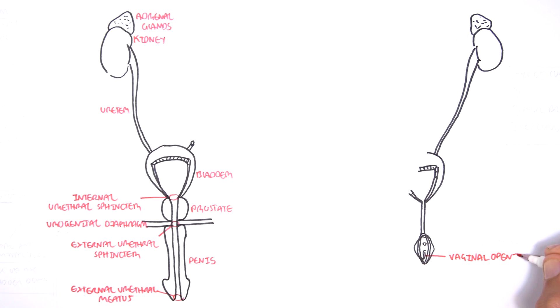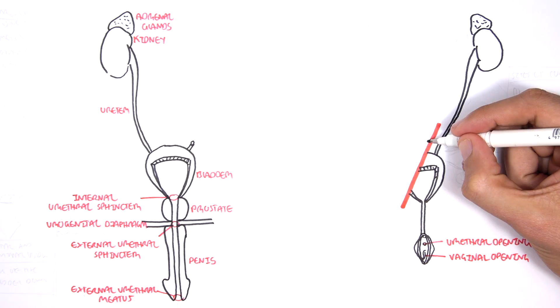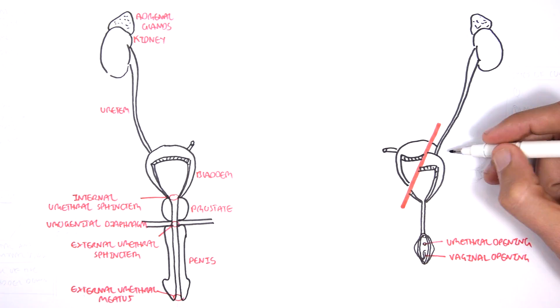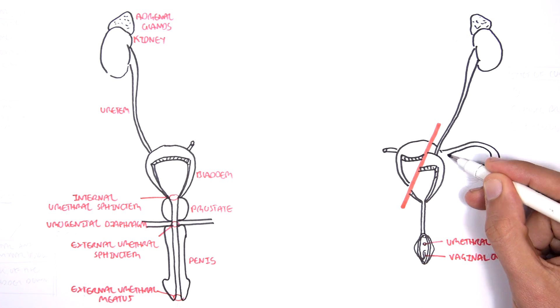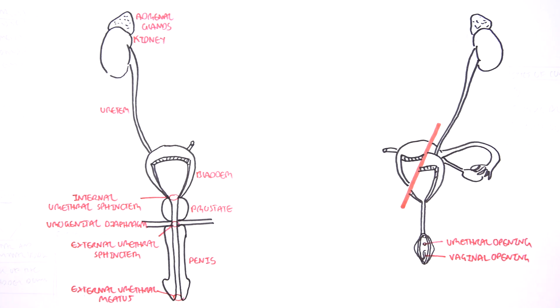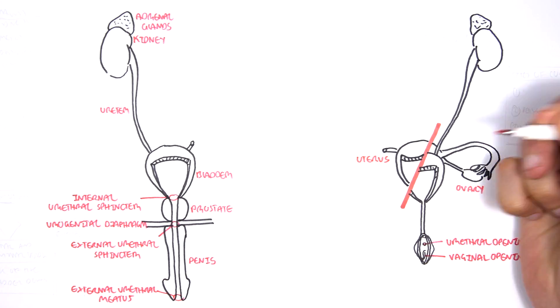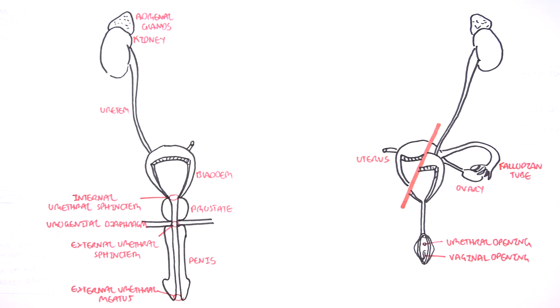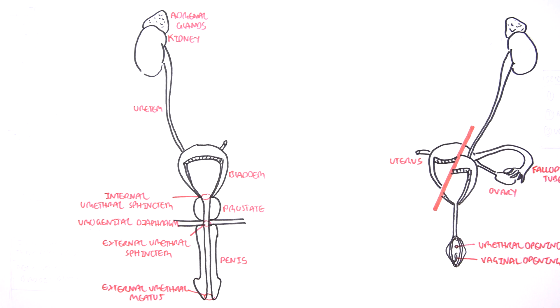Alright, so that was the males. Let's look at the female now. Here we have the urethral opening where urine comes from and the vaginal opening for sexual activity. Here is the fallopian tube for the reproductive system and the ovary where the eggs are. I am cutting a section because on this side is the uterus, and essentially the fallopian tube comes from the uterus.